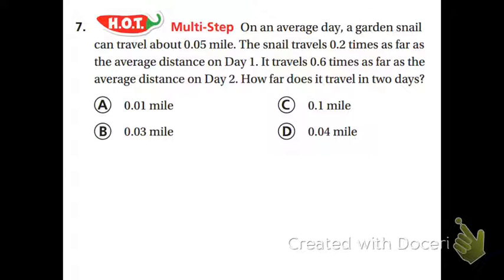On an average day a garden snail can travel about 0.05 of a mile. The snail travels 0.2 times as far as the average distance on day one. It travels 0.6 times as far as the average distance on day two. How far does it travel in two days?